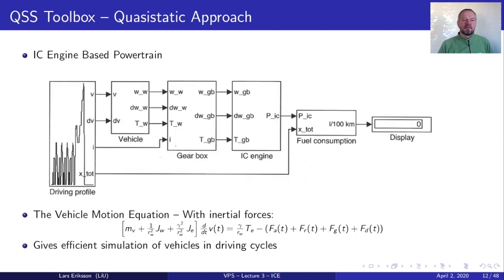An example of a toolbox implementing quasi-static simulation is the QSS toolbox, which you will work with in your hand-in assignment. Here you recognize the driving profile, the vehicle, the gearbox, the combustion engine, and the integration of fuel consumption to get total fuel economy. Central in this simulation is the vehicle motion equation inserted in the vehicle part, which is transmitted to get the engine torque. We have the vehicle losses, the gearbox transmission, and the torque request from the engine leading to a fuel consumption. This type of simulation gives very efficient simulations, so we can efficiently evaluate many different design choices.